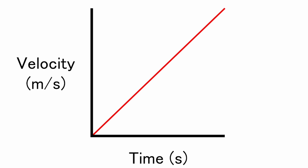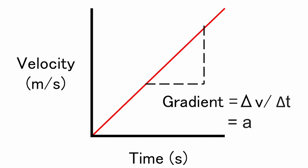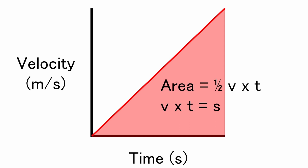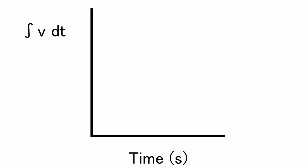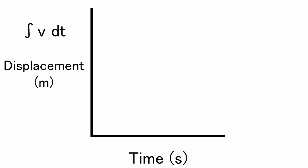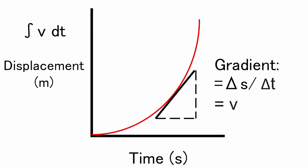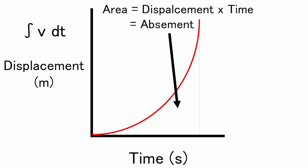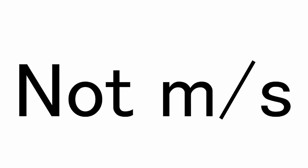We know the properties of a velocity-time graph: the gradient is the acceleration, and the area underneath — velocity multiplied by time — will give us the total distance travelled. When we integrate the velocity, this area under the graph is now plotted on the y-axis, and time remains on the x-axis. Now looking at a displacement-time graph, the gradient is the velocity, whilst the area underneath is the absement. Consequently, absement has the SI unit of metre seconds — not to be confused with metres per second or milliseconds.